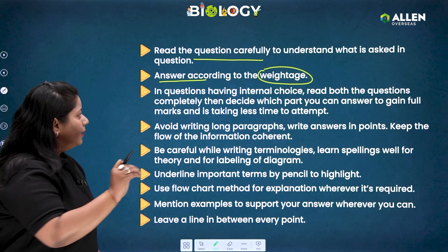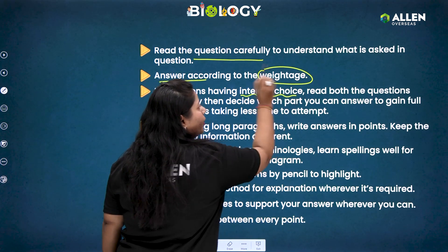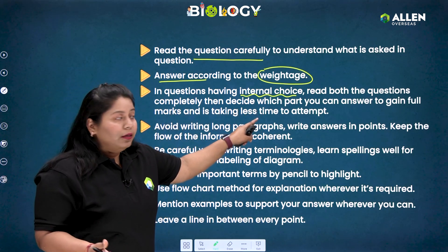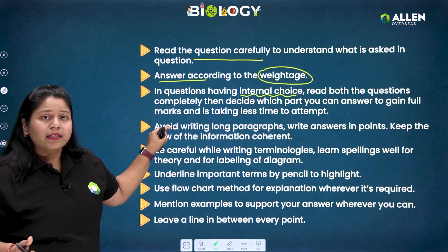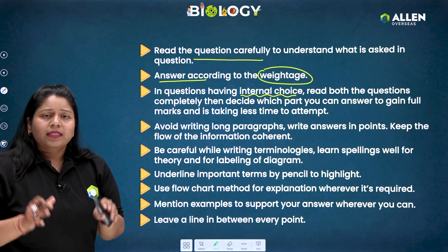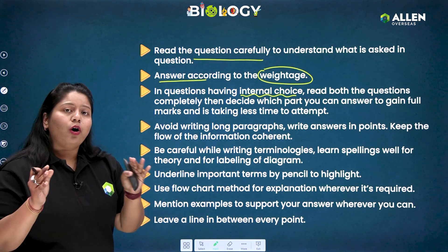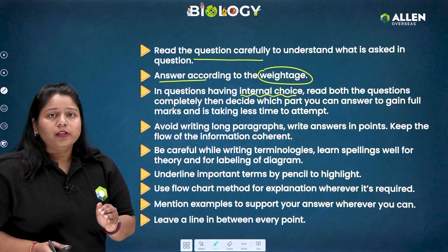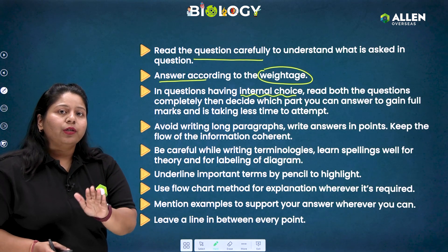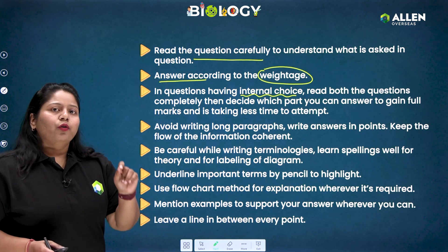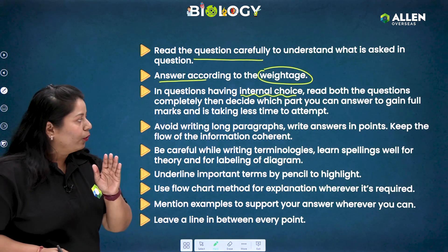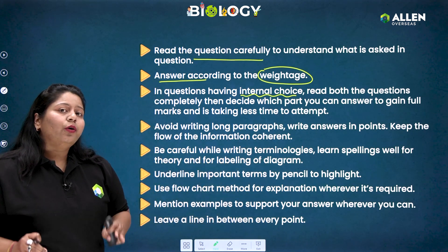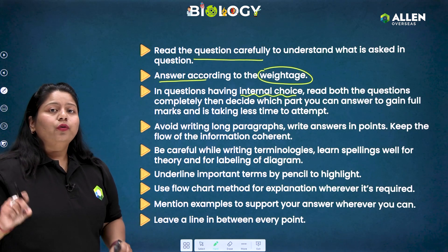In questions having internal choices, read both the questions completely, then decide which part you can answer to gain full marks while taking less time. Sometimes students don't read the optional question, so you have to read both questions in the internal choices and wisely decide which you are completely aware about — giving you full marks and taking less time. Also, avoid writing long paragraphs; write answers in points.